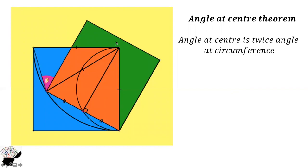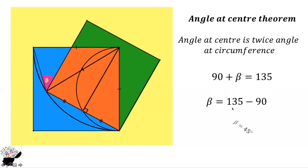The whole angle at the center — since this side is already 90 degrees, the reflex angle on this side is 270 degrees. The angle at the center is twice the angle at the circumference, so the angle at the circumference is half of 270, which is 135 degrees. Since the square contributes 90 degrees, we have 90 plus beta equals 135. Subtracting 90 from both sides, beta equals 45 degrees. That is the answer.